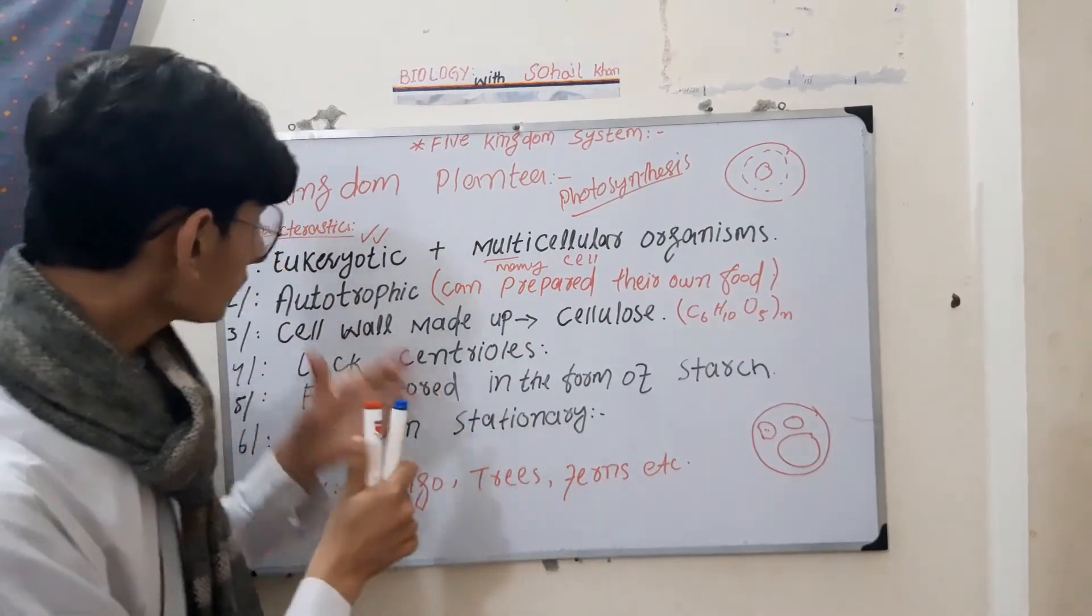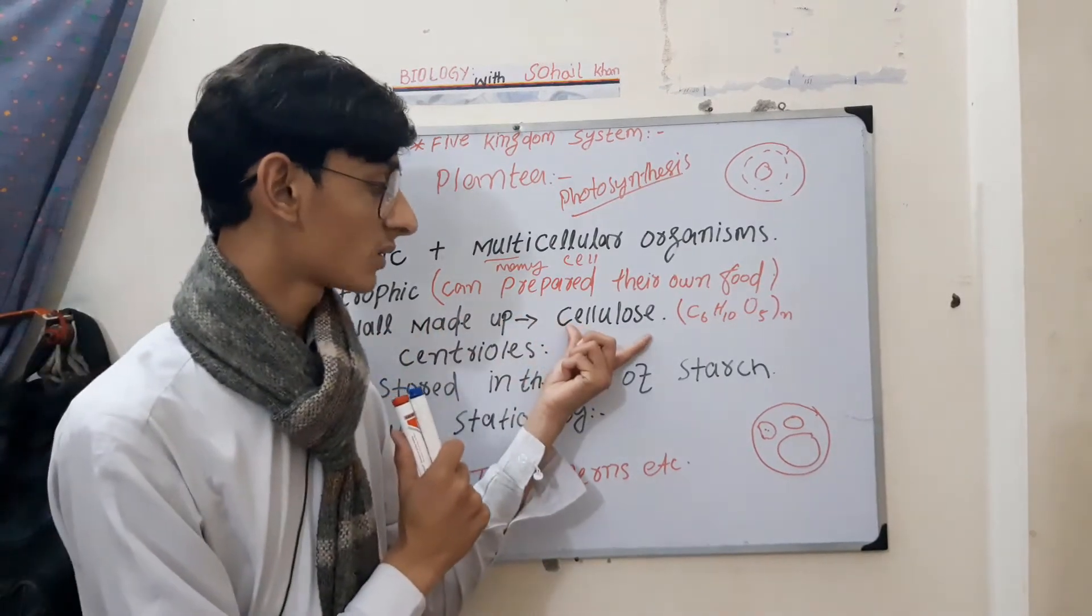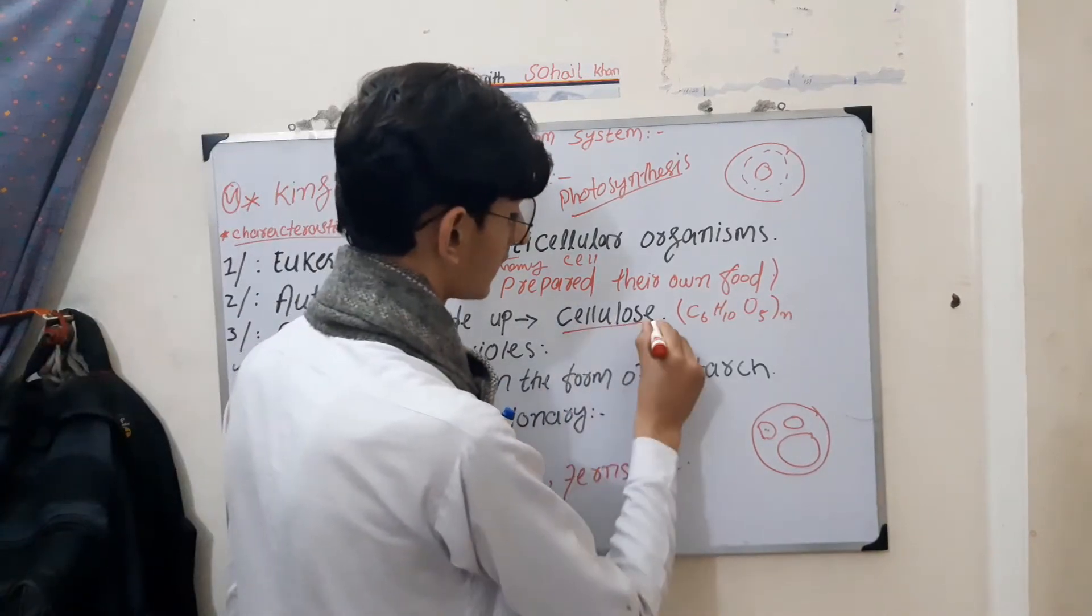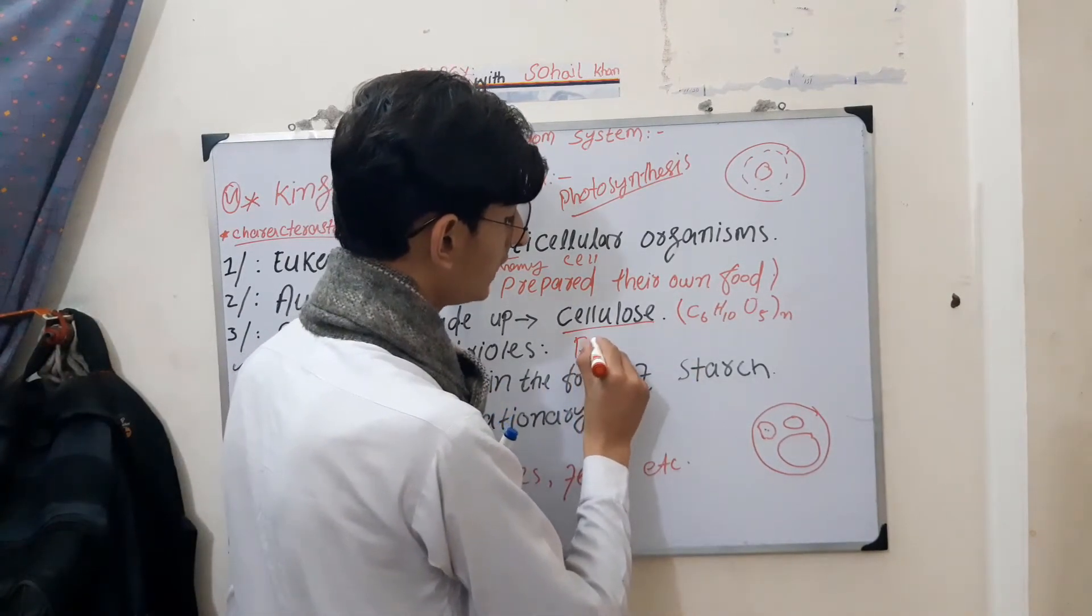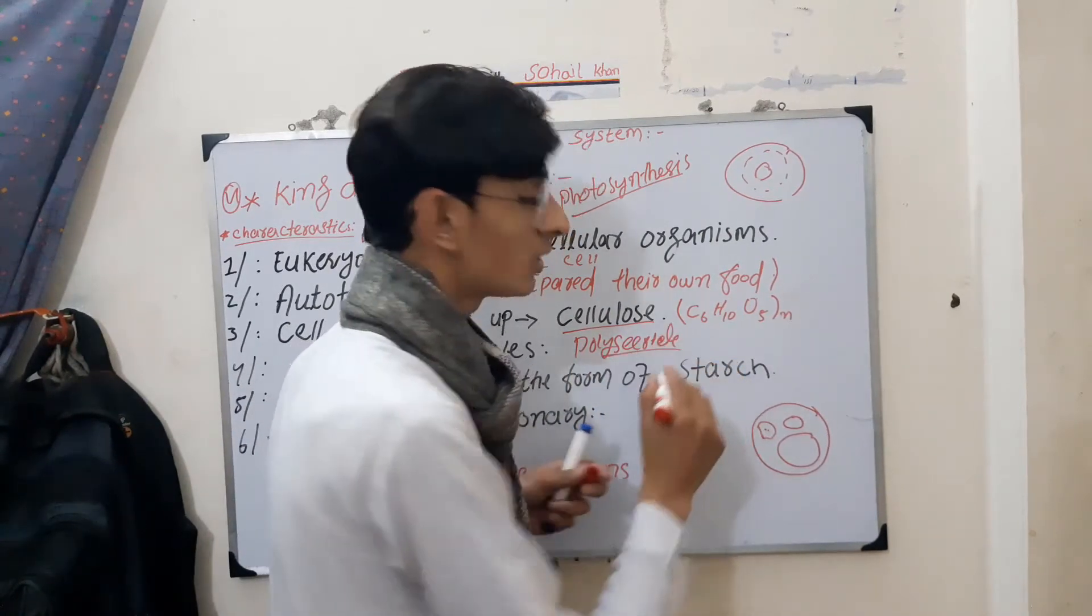Another strong important character is that their cell wall is made of cellulose. Cellulose - their cell wall is made of a polymer called cellulose.